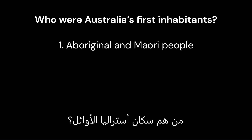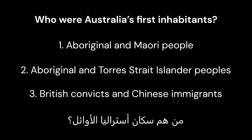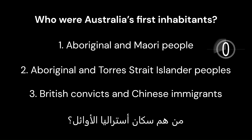Question 1: Who were Australia's first inhabitants? Option 1: Aboriginal and Maori people. Option 2: Aboriginal and Torres Strait Islander peoples. Option 3: British convicts and Chinese immigrants. Correct answer is 2: Aboriginal and Torres Strait Islander peoples.